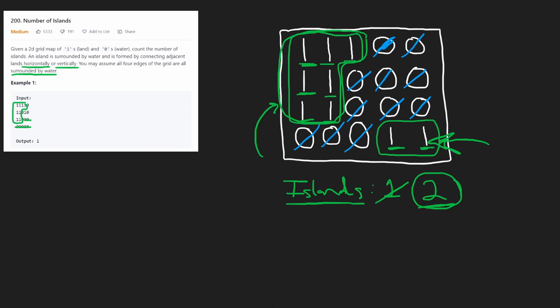Now we have an idea of how the algorithm works. But the difficult part — unless you know a bit about graph algorithms — is how do we actually determine the entire area? How do we get all the adjacent neighbors of an island and mark them as visited? Let's take a look at how we can do that.